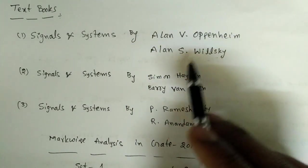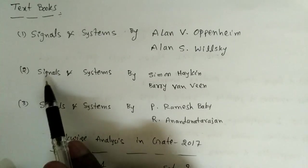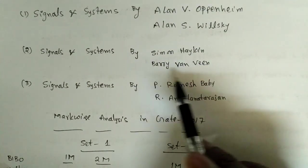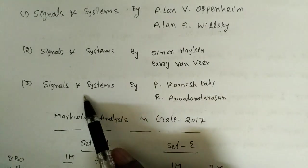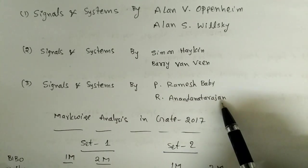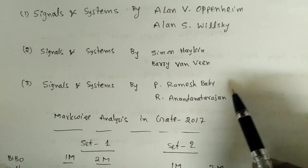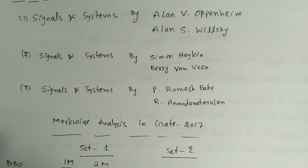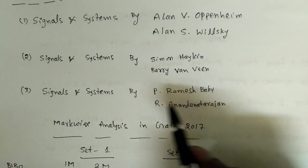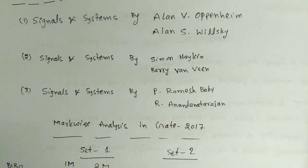The second one, if you want to follow for more numericals, is Signals and Systems by Simon Haykin and Barry Van Veen. Third is Signals and Systems by P. Ramesh Babu and R. Anandanatarajan. We will get so many problems for practice purpose. You can follow any one of these. The first one everyone should have. Otherwise I will cover numericals and make a PDF for the numericals.